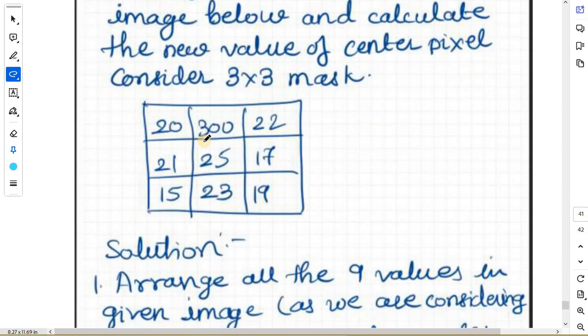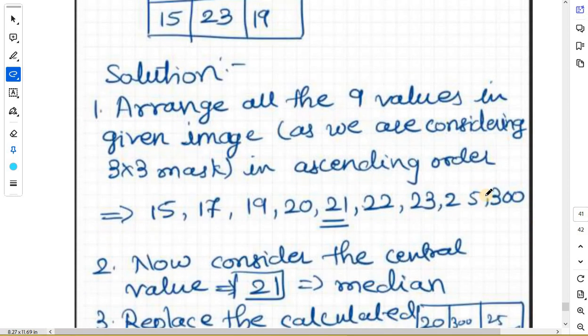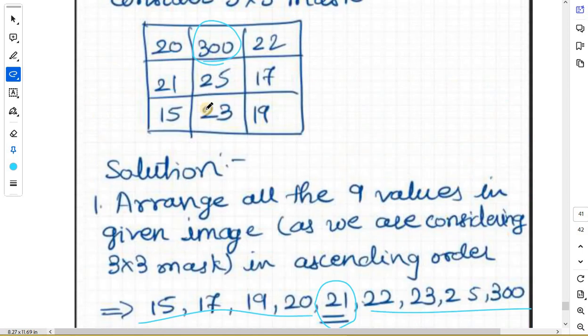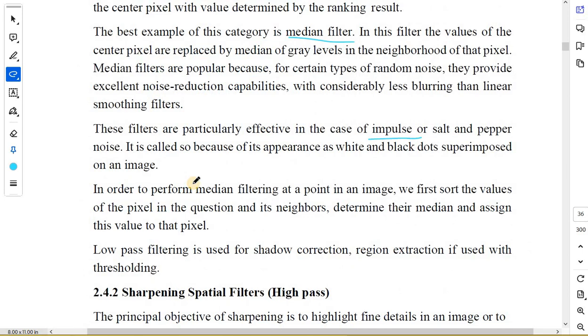How does median filter work? First, sort the values in your particular neighborhood - whatever mask size you have considered. Sort those values, determine the median, and assign the value to the center pixel. Let us do this example. Apply median filter to this image. You see this value of 300? This is called spike noise - a sudden spike in the value. This value is wrong; it is noise that cannot be in the normal range. I want to remove it because if I take the average, the average will suddenly be too high. How to remove this value? Arrange the nine numbers in ascending order. Leave four numbers on this side, leave four numbers on that side. Your center value is 21. You replace 25 by 21. This is the concept of median filter.